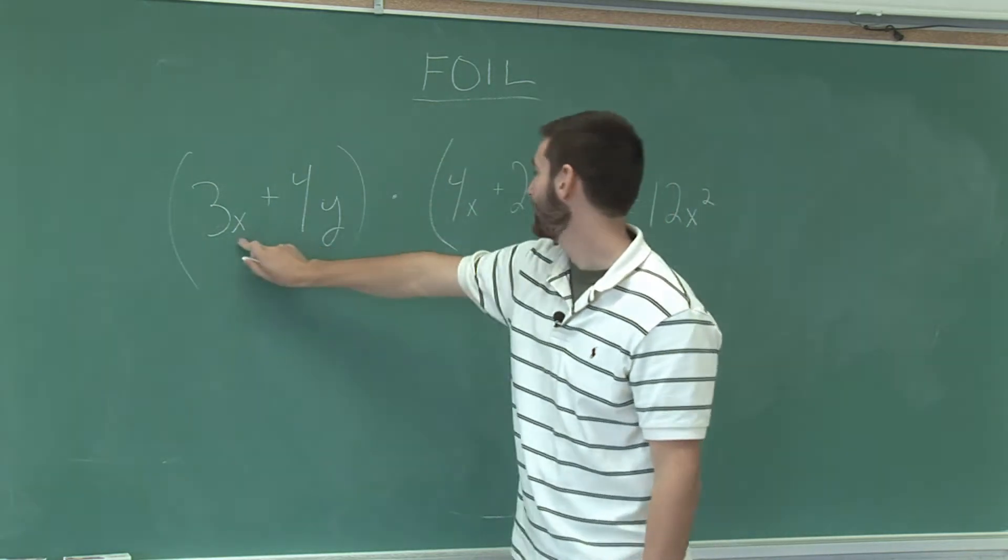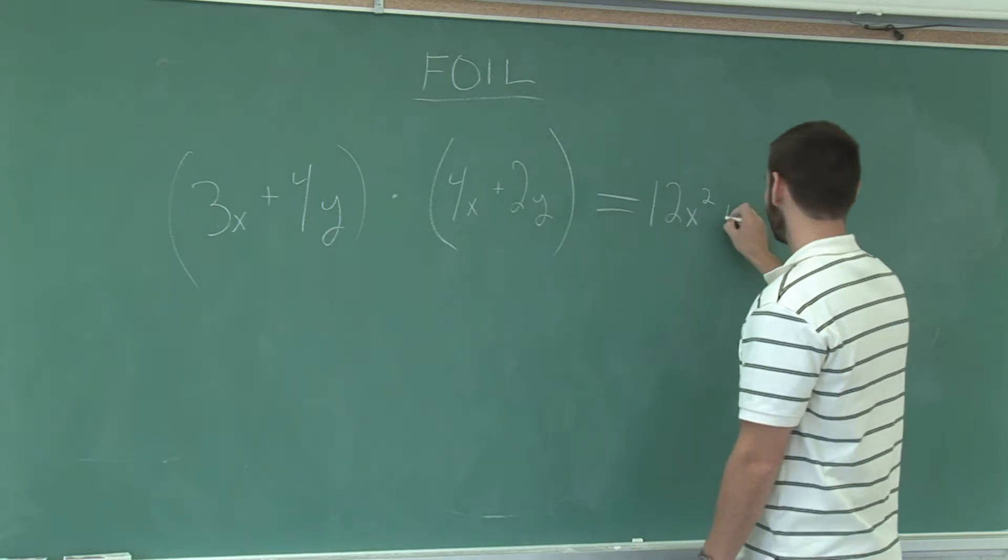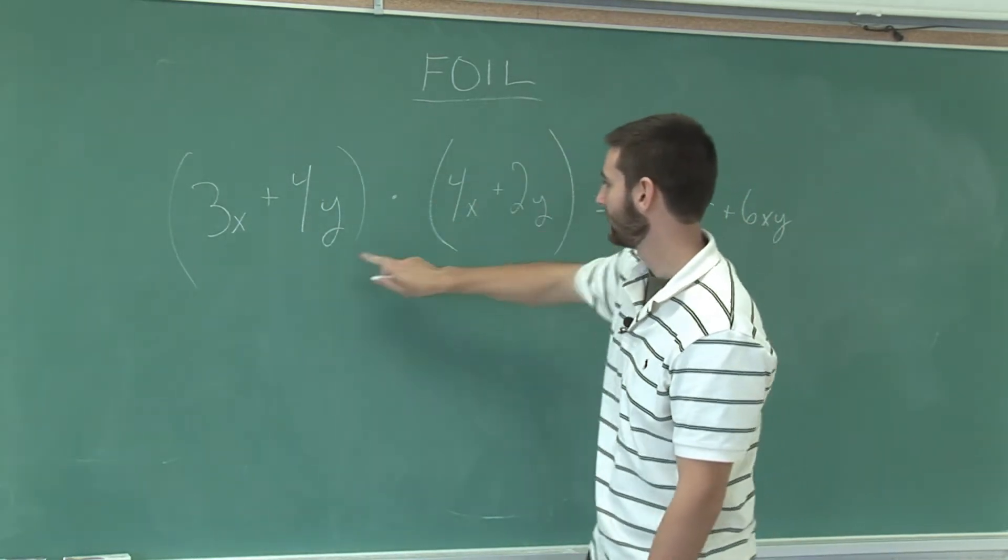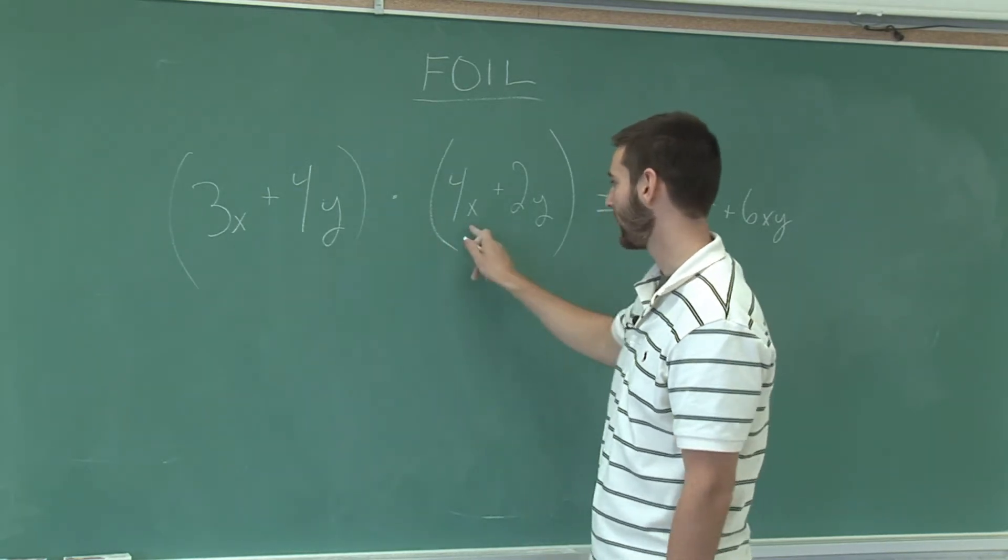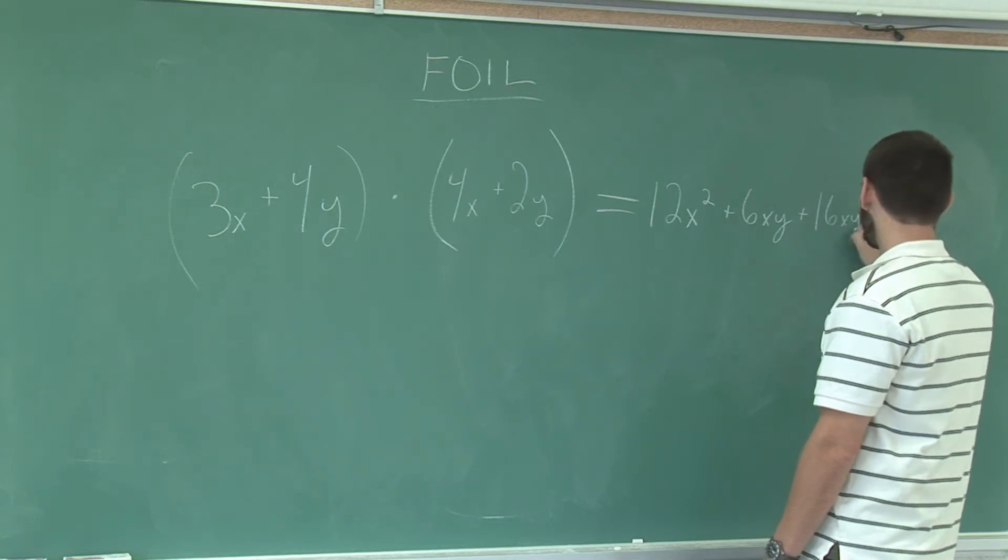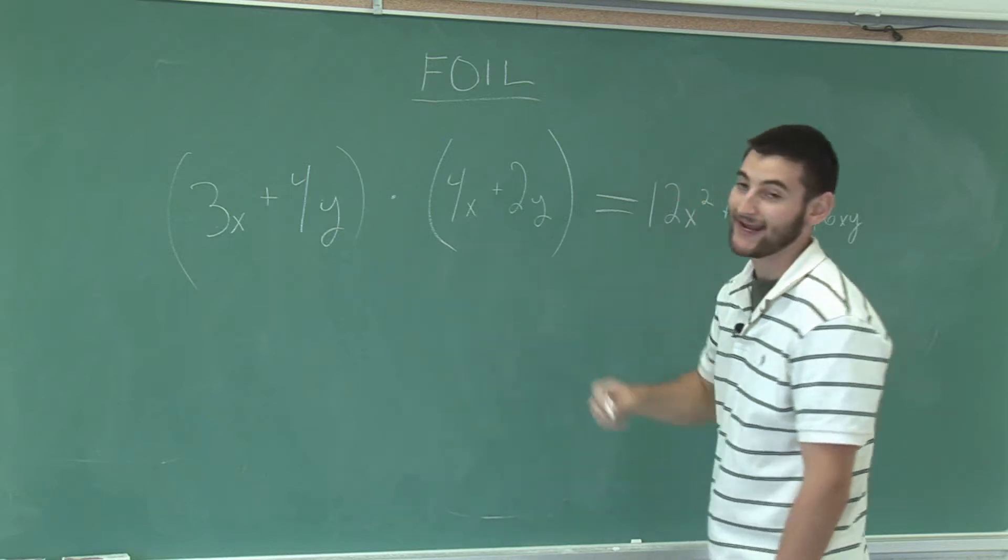Outers, 3x times 2y is 6xy. Inner, 4y times 4x is 16xy. Last, 4y times 2y is 8y squared.